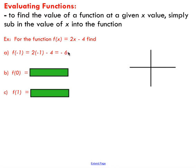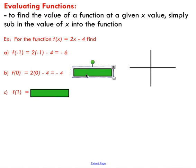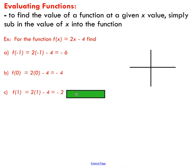For part b, I'm going to evaluate the function at zero — see what happens when I put zero into my function. I've got two times zero, which is zero, minus four, so I get negative four. For part c, I evaluate the function at one — I put one into the function and you can see I get negative two out.